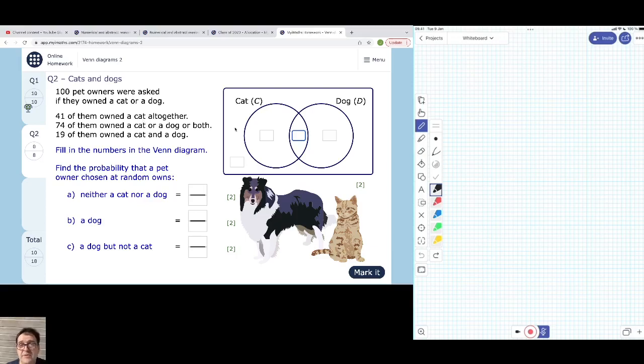Do they mean as opposed to owning half a cat? What they mean is there are 41 people altogether that owned—maybe they just owned a cat, maybe they owned a dog as well. So in the whole circle for cats, there are some people that just own a cat, some people that also own a dog. And altogether, that makes 41 people.